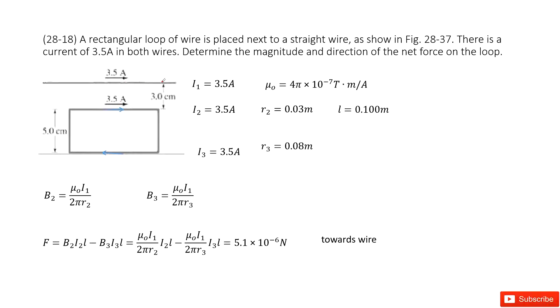First of all, we look at this wire. We can see it will bring the magnetic fields. Using the right-hand rule, you can see it points this way.